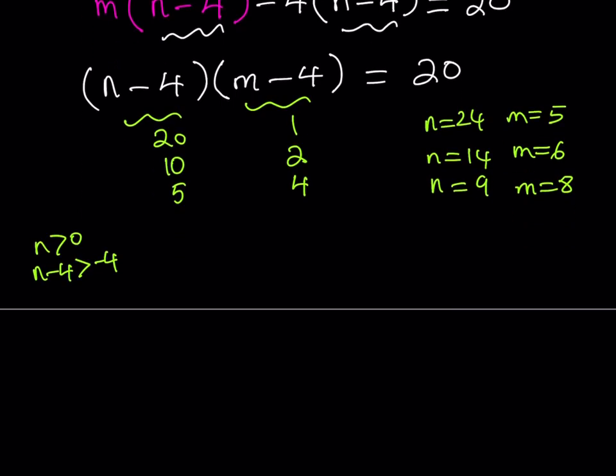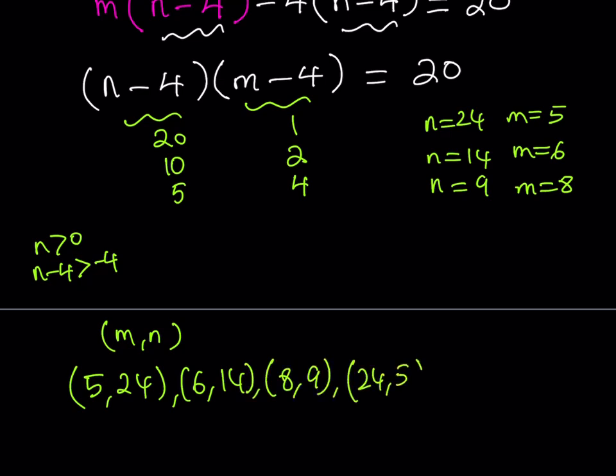So our solution set is, if I write it as an ordered pair like (m,n), if I were to write the solutions as ordered pairs, then I should be getting (5, 24), and then I would get (6, 14). Then I would have (8, 9). And then I'll just flip these around: (24, 5), (14, 6), and (9, 8). And those are going to be all my positive solutions.